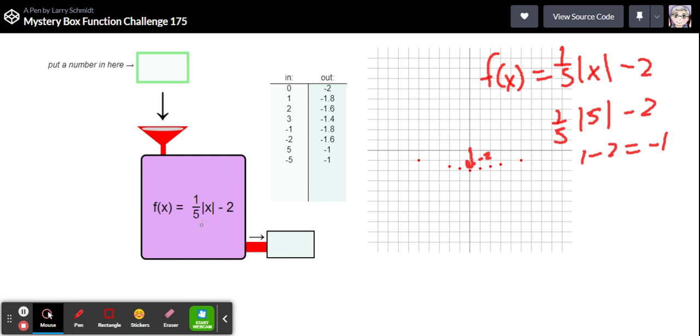And there it is. One fifth times the absolute value of x minus two. And let's graph that, a very wide and shallow absolute value function.